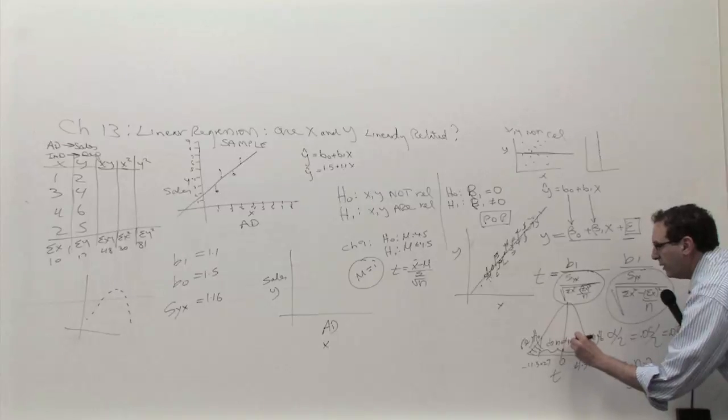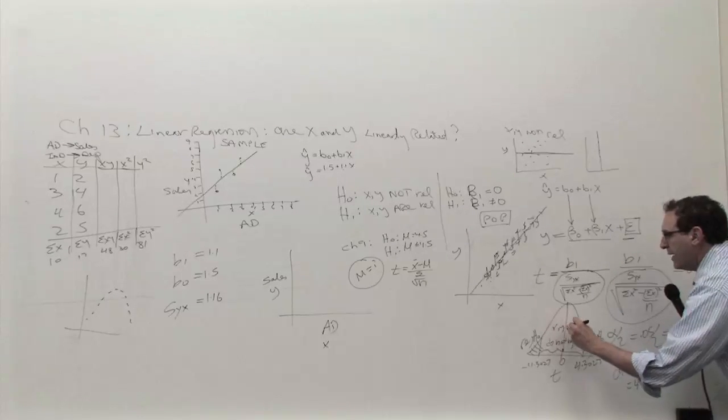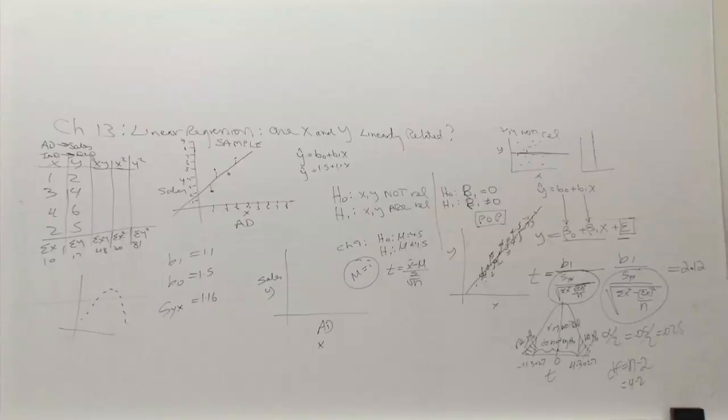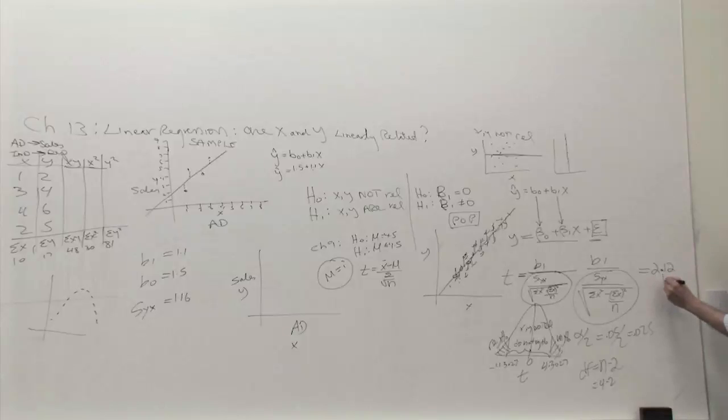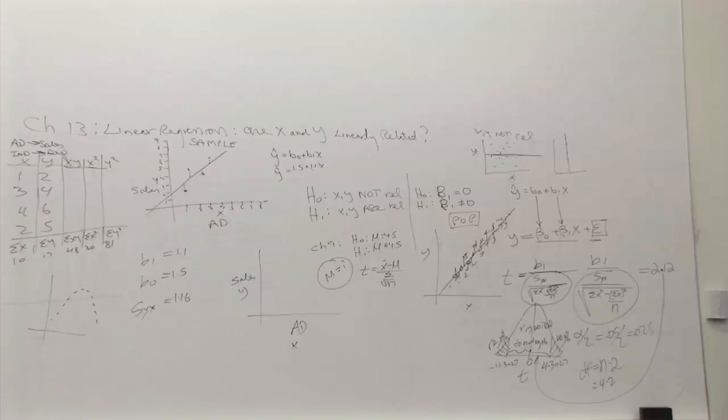Which means X and Y are not related. Okay. X and Y not related. If you end up in the middle part. And, finally, after all is said and done, what's step number 4? Step number 4 is you make a little arrow. 2.12. It's right here. It's in between 0 and 4.3. You're clearly in the do not reject region.